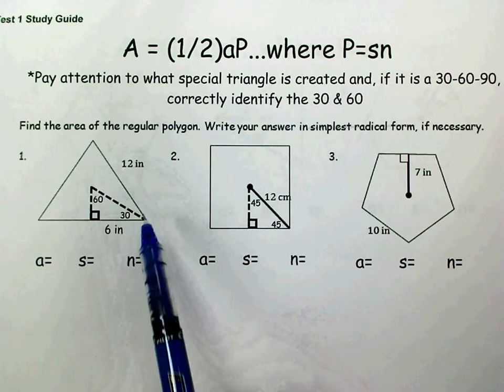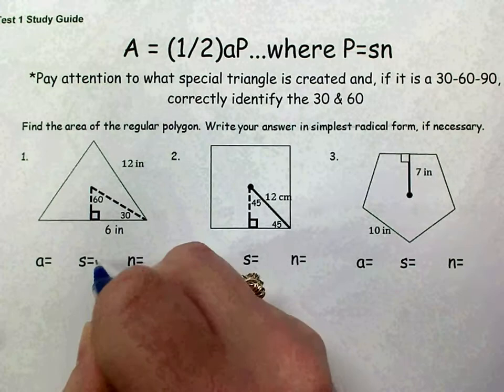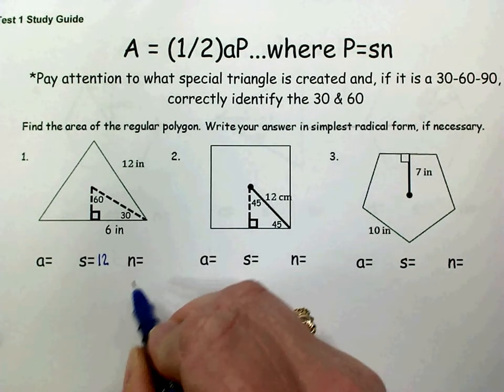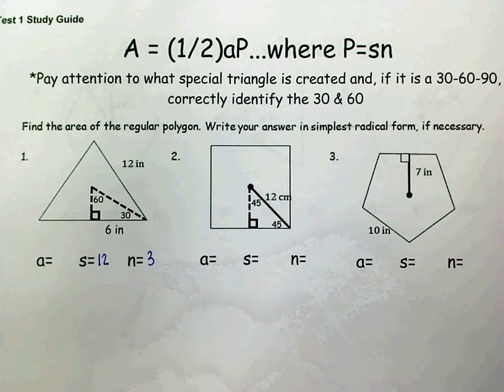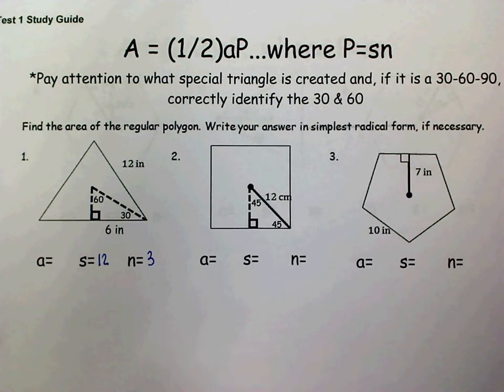On number 1, you were just given the side length. So I can fill in my side length is 12 inches, the number of sides is 3 since it's a triangle. I need to find my apothem.